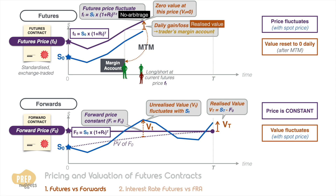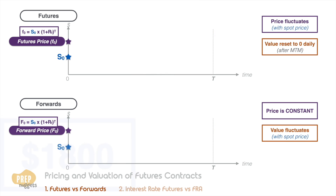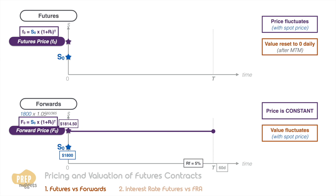To illustrate, let's say the spot price of gold is $1,800 at the initiation of a 60-day forward contract and the risk-free rate is 5%. We've learned how to calculate the price of a forward at initiation, so why don't you try calculating it — assuming there is no cost or benefit in holding the underlying. You should get this amount. This is the price of the forward and it remains constant once the contract has been initiated.